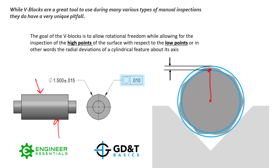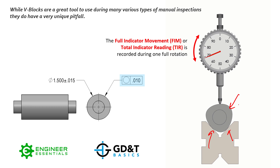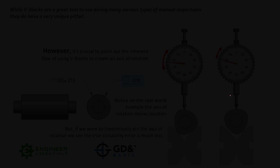Ideally, measurement is about the axis of the feature. The total indicator reading you get when you place an indicator on the part is going to be that radial deviation with respect to that axis. However, there's a very unique pitfall: the geometry of the v-block and the geometry of the surface being inspected interact with each other in ways that don't necessarily give us a fixed axis of rotation.